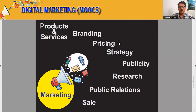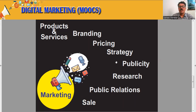Then we have to decide the proper price of our product or service — that comes under the pricing step, which is a very important element of marketing, so that we get sufficient profit after the sale. Then for marketing we need to do some planning or have some strategy — how we are going to sell the product. After that, we have to do some publicity; all the advertisement work comes under publicity, and with different ways we can do publicity of our product or service.